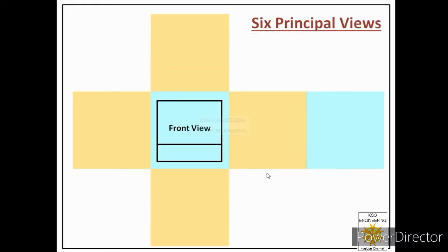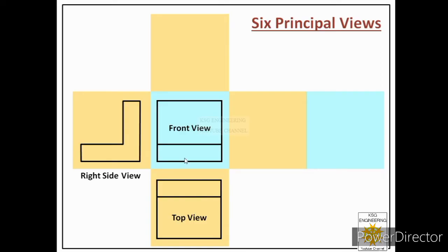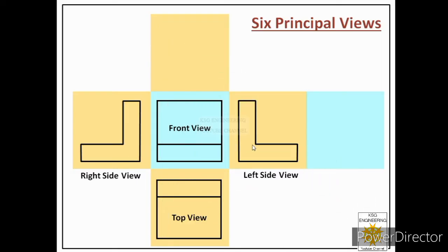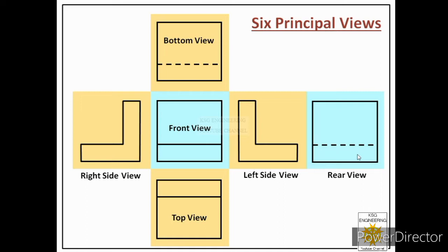Here the six principal views of that object are shown. This is the front view. Below the front view we draw the top view; on the left side of the front view we draw the right-hand side view; on the right side we draw the left-hand side view; the bottom view is drawn above the front view; and this is the rear view. This pattern is followed under the first angle of projection method.